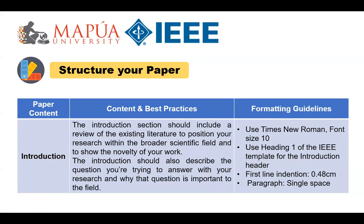Moving on to the introduction: first, introduce your topic — the first job of the introduction is to tell the reader what your topic is and why it's interesting or important. Number two, describe the background, the problem, and how you are going to resolve it. Number three, establish your research problem, making sure that the root cause of the problem is being tackled. Step four, specify your objectives. Number five, map out your paper, including your resolution and methodology on how to solve the problem.